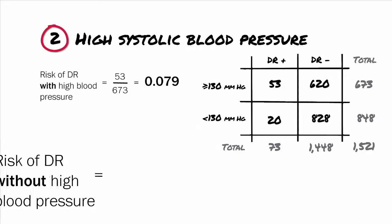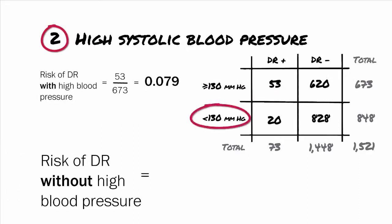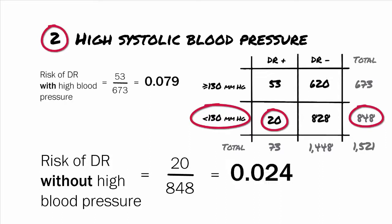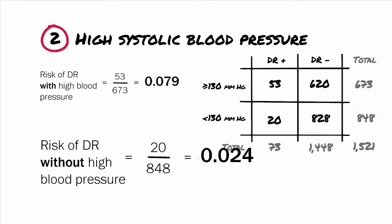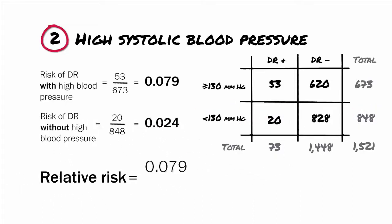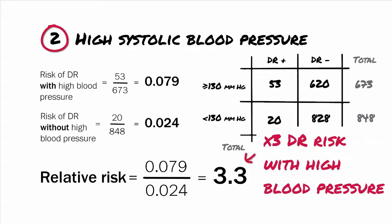To get the risk of having the disease in participants without high blood pressure, we divide 20, the number of participants with DR but without high blood pressure, by 848, the total number without high blood pressure. This equals 0.024. The relative risk is 0.079 divided by 0.024, which equals 3.3. This means that there is more than 3 times the risk of developing DR if you have high blood pressure.